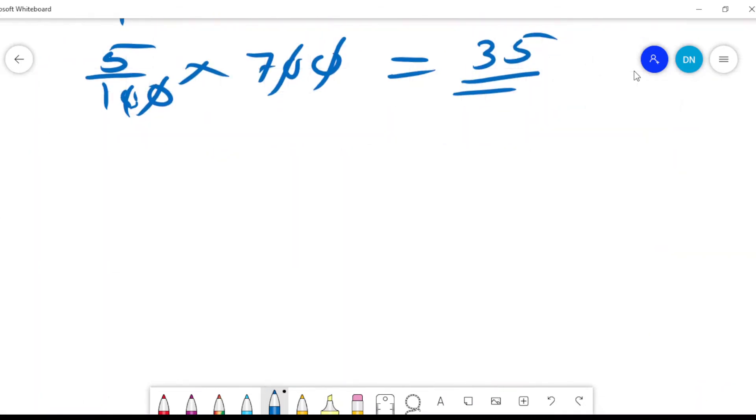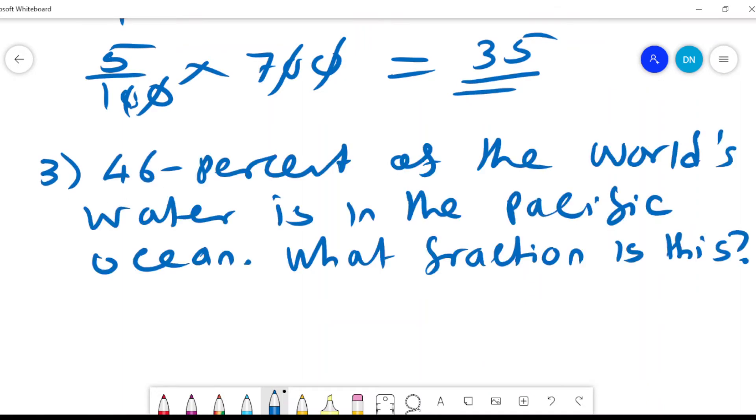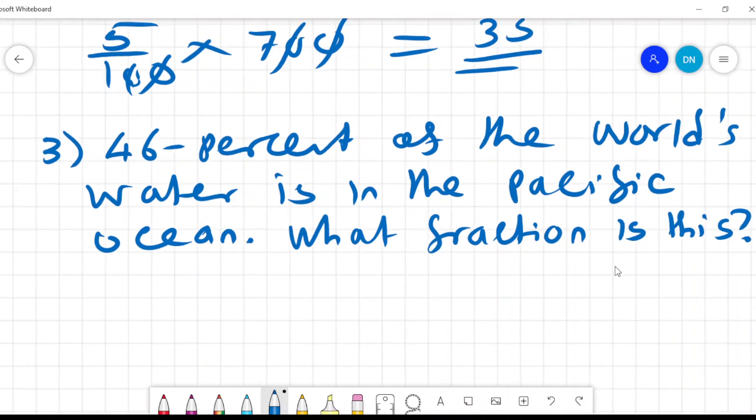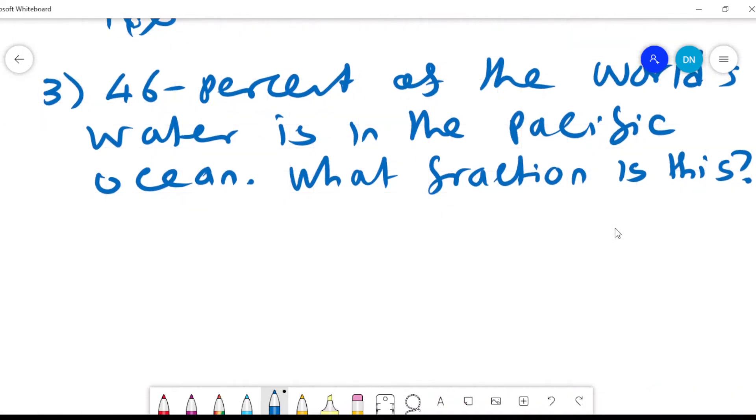We have another example. We are told that 46% of the world's water is in the Pacific Ocean. What fraction is this? The fraction will be 46%, so 46 over 100. Divide by 2 is 23, divide by 2 is 50, which is 23 over 50, and that's the fraction.